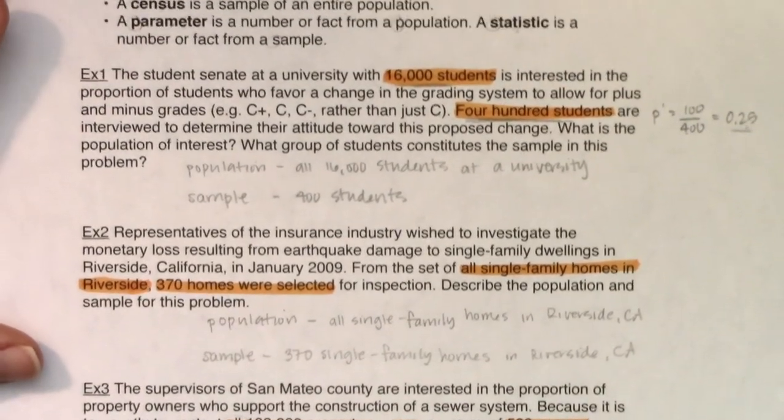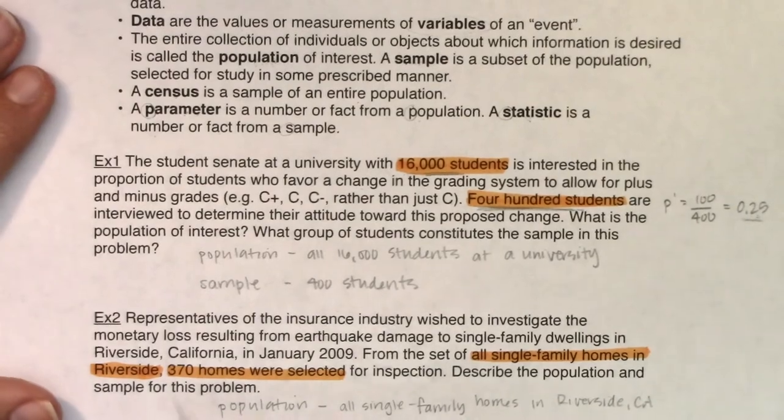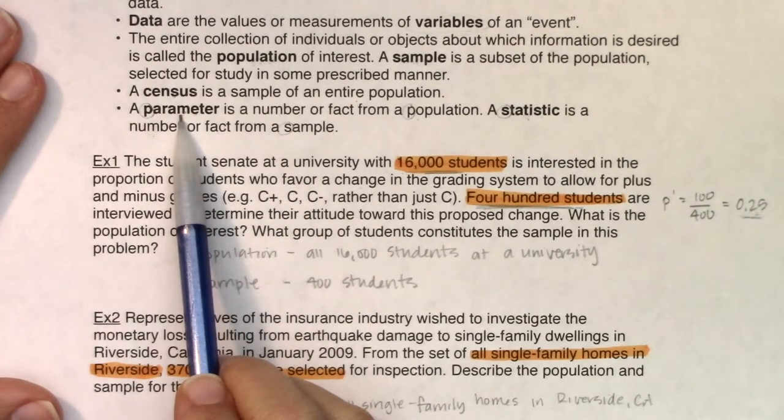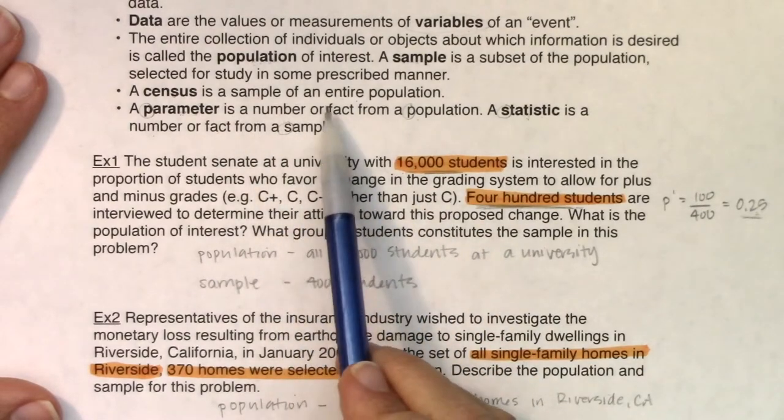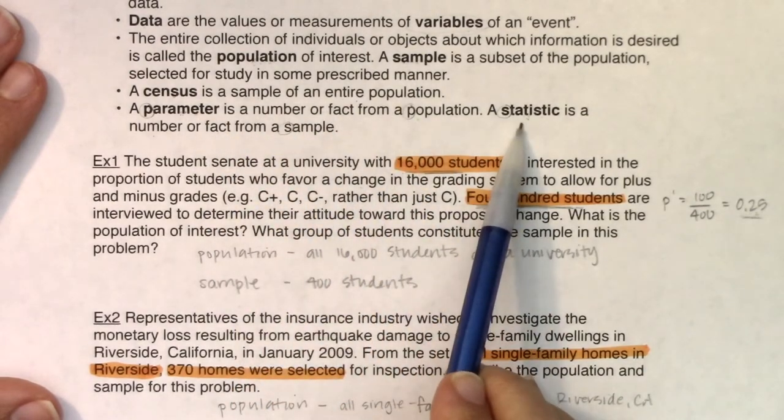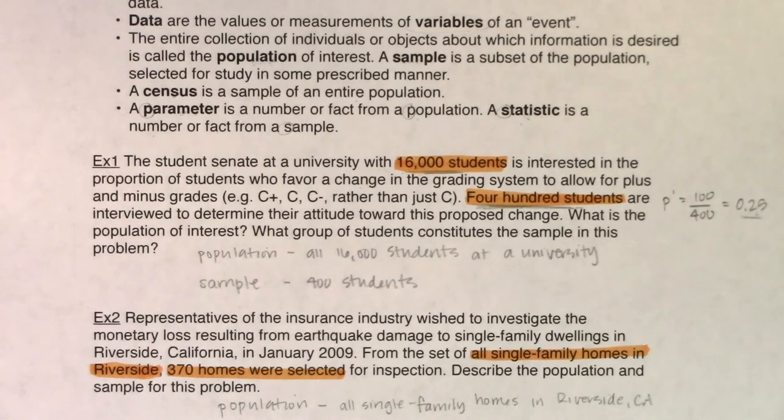And when you run the census, I want to just reiterate, if you run the census, you get a parameter. We very rarely run a census. So usually we're running a sample and we're going to get a statistic. So moving on to the next page.